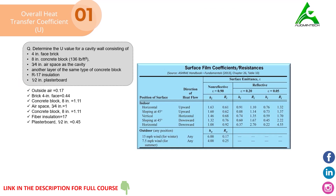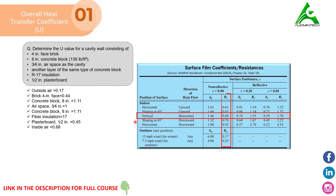Finally, we find the resistance of the inside air. We use the same chart as for the outside air, this time selecting the section for indoor conditions. On selecting the suitable row and column, the value of resistance is found to be 0.68. So the resistance of the inside air film is 0.68.